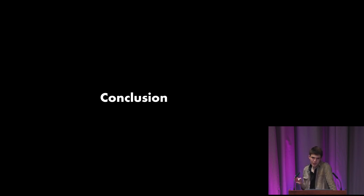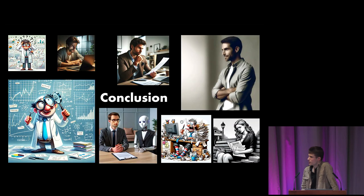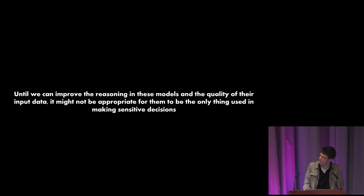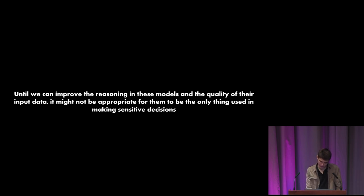Bias is by no means an insolvable problem. I haven't focused on solutions here because I think it's better for most people to have an understanding of the problem itself. That said, I did find alarmingly little research dealing with a lot of these issues from this much more computational perspective. And I think it's an area of study we can actually learn a lot from as data scientists. There is a real lack of understanding of the complexity of this topic, particularly among powerful players in the data science industry. And you will have also noticed that all of the AI generated images used in this are not exactly representative of the average person. Even the woman there I actually had to input woman to get that. So if there is one thing you take away from this talk, let it be this: Until we can improve the reasoning in these models and the quality of their input data, it might not be appropriate for them to be the only thing used in making sensitive decisions. Thank you.